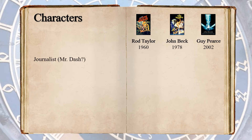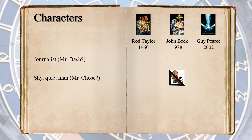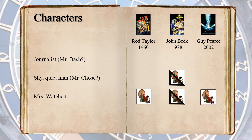A journalist possibly named Mr. Dash does not appear in any version. A shy, quiet man whom the narrator states never says anything during the dinner — possibly named Mr. Chose, described as having a beard — so Beck gets a partial point for one of the characters speaking to the traveler having a beard, though he's not a shy or quiet man. Mrs. Watchit, the traveler's housekeeper, appears in Taylor and Pierce, while Beck gets a partial point for the character appearing as the traveler's secretary.